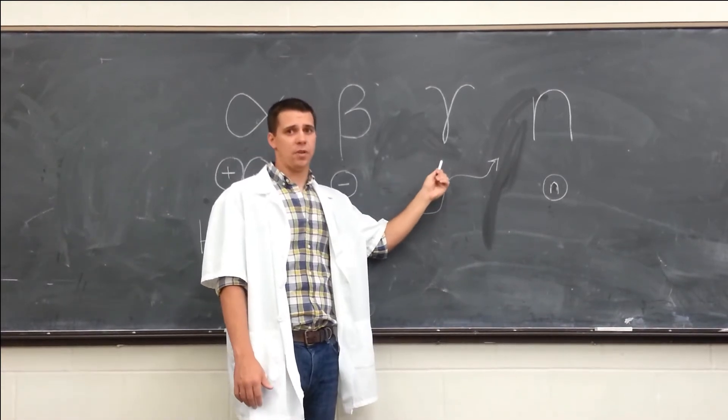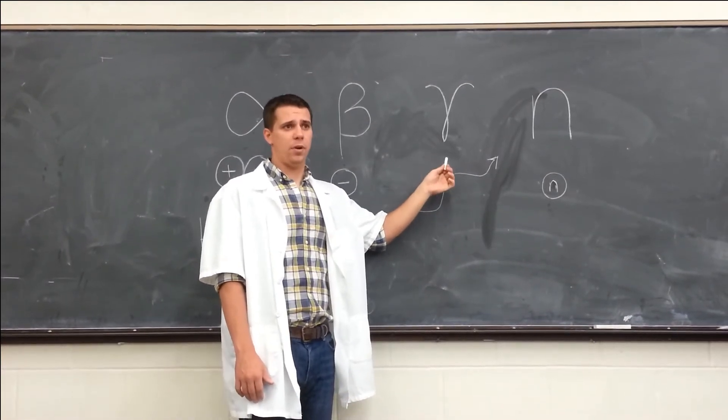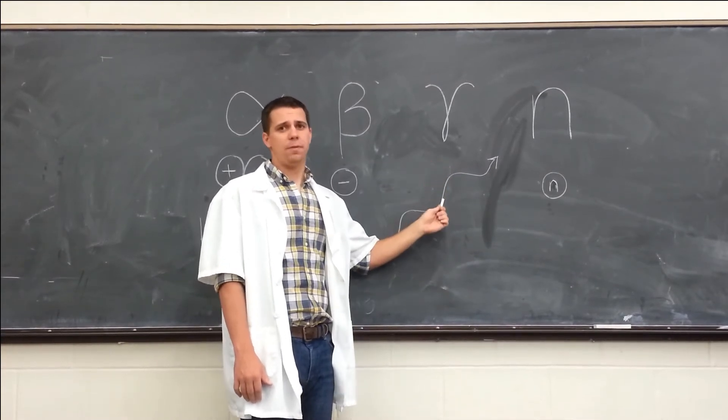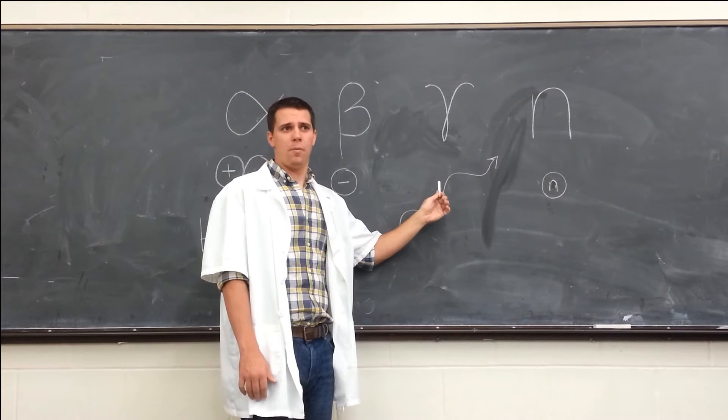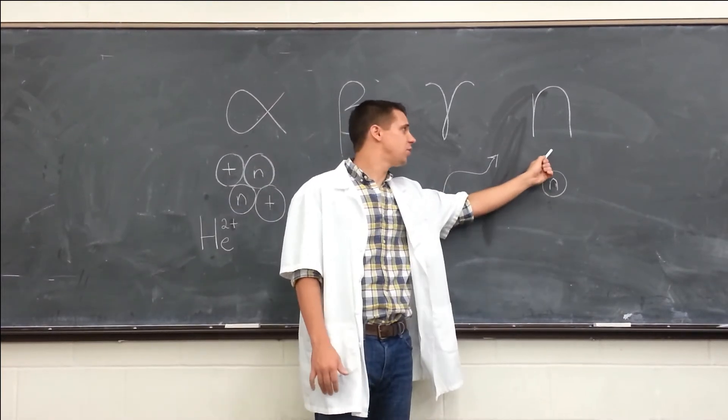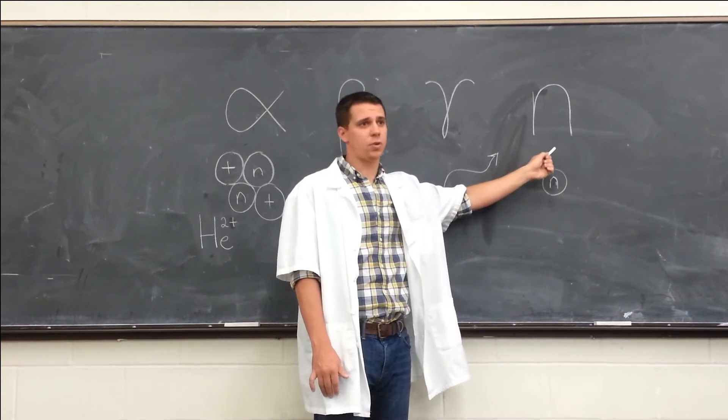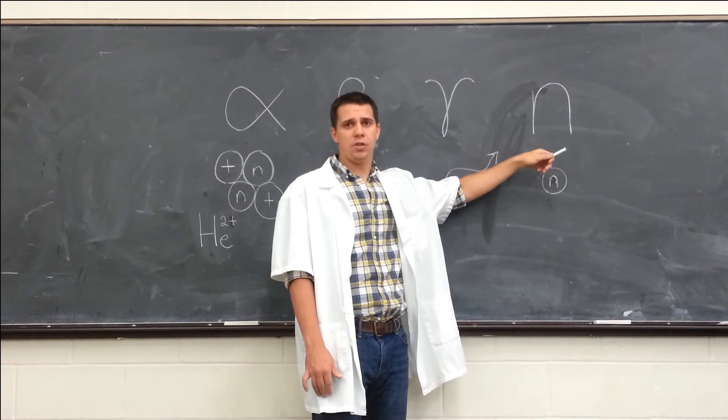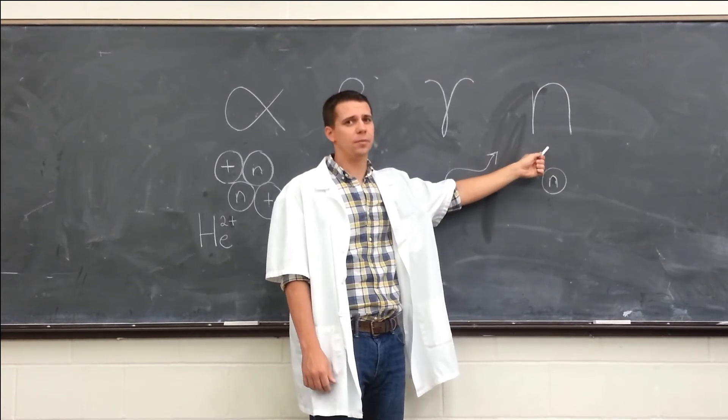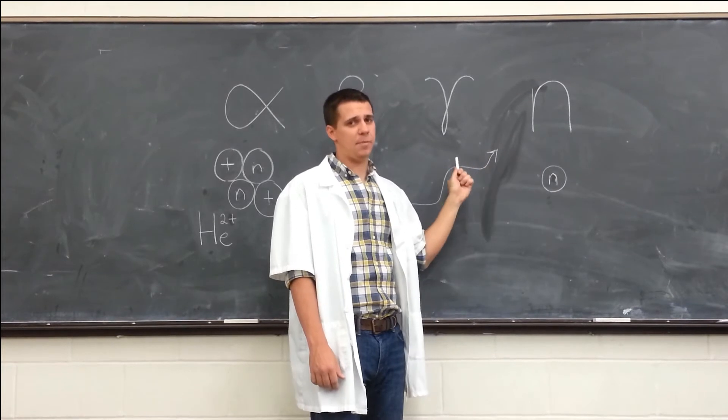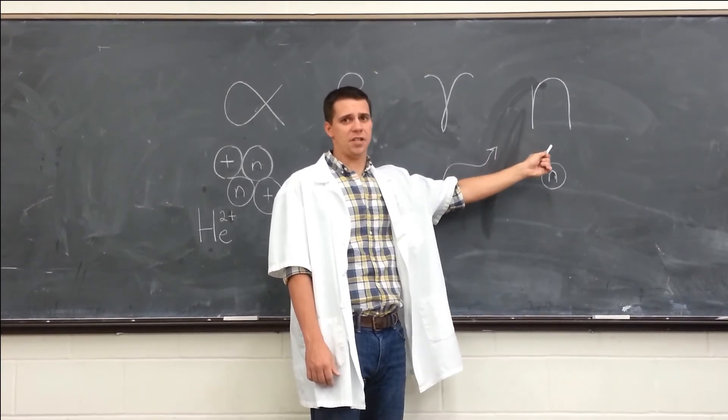Now, gamma radiation though, it'll pass right through you and is incredibly difficult to shield. It's caused when high energy photons are emitted from a sighted nucleus. However, the most dangerous radiation is neutron radiation. It's caused when a neutron is produced during a reaction such as nuclear fission. It's incredibly hard to shield, and it does a lot more damage than gamma radiation because it has mass, unlike a photon.